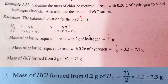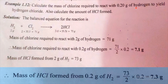The next part: what is the amount of HCl formed? From the balanced equation, 2 grams of hydrogen form 73 grams of HCl. Therefore, the mass of HCl formed from 0.2 grams of hydrogen is: 73 divided by 2 into 0.2 is equal to 7.3 grams.